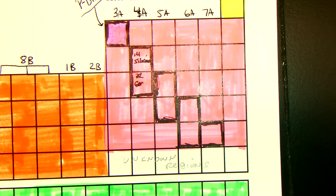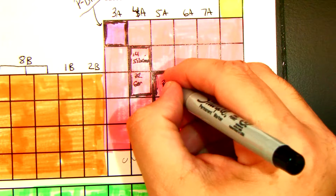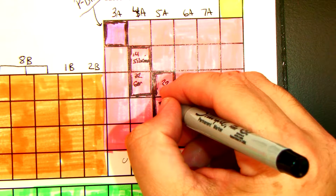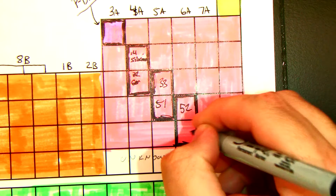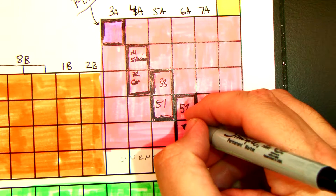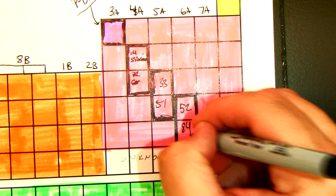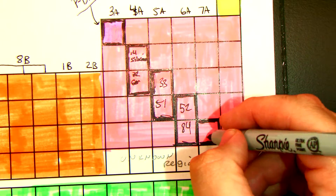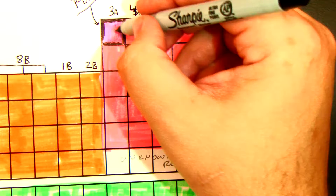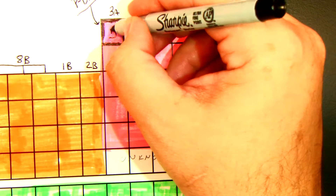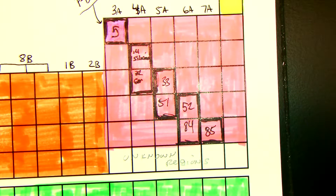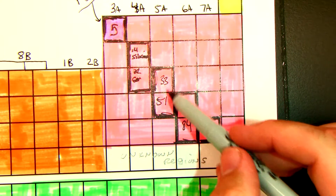The next one is arsenic at 33. Then that would be 51, and 52. Then 84 and 85. And this one is 5. So the metalloid atomic numbers are: 5, 14, 32, 33, 51, 52, 84, and 85 — those are all your metalloids.